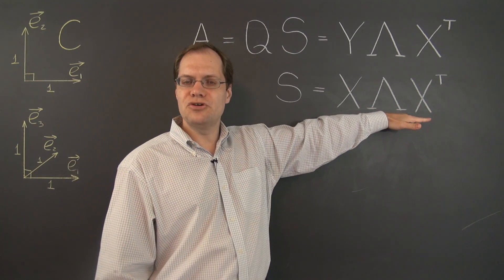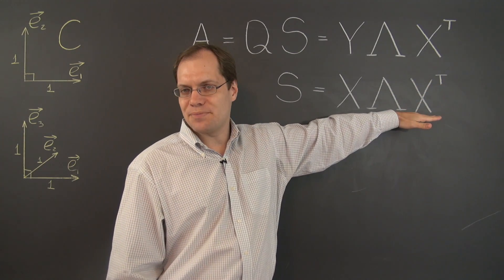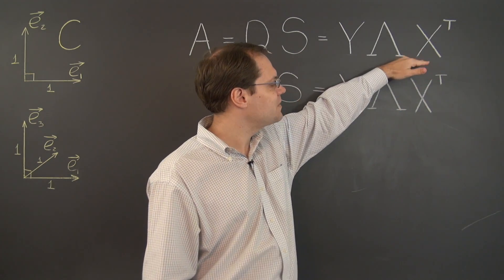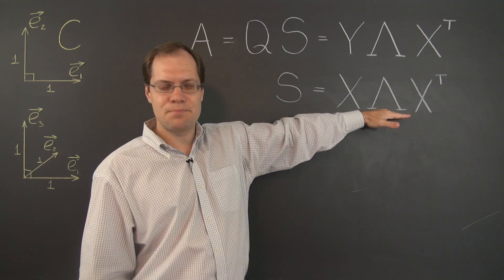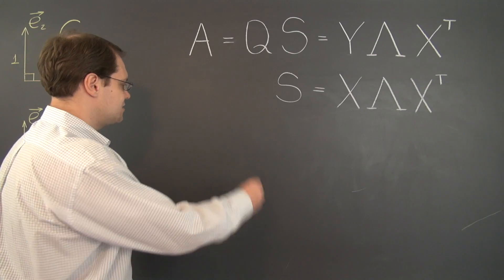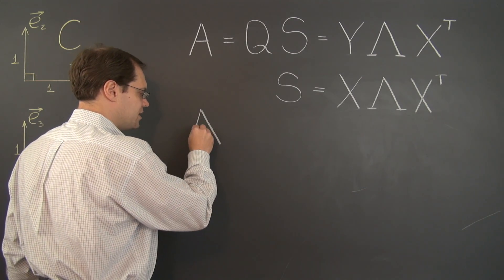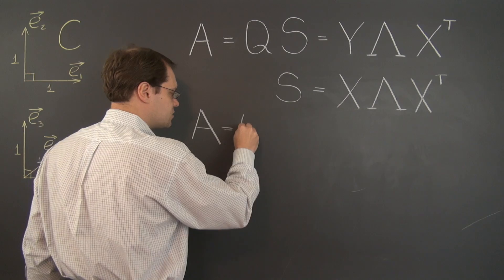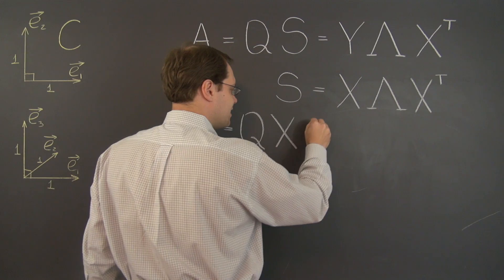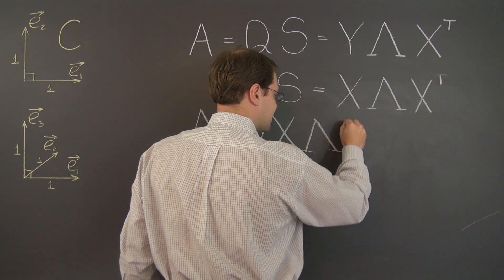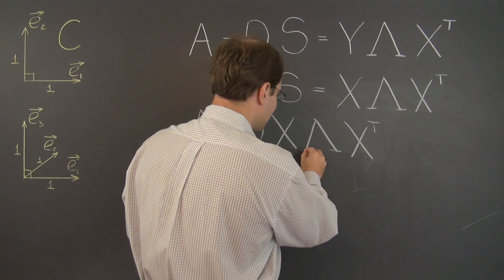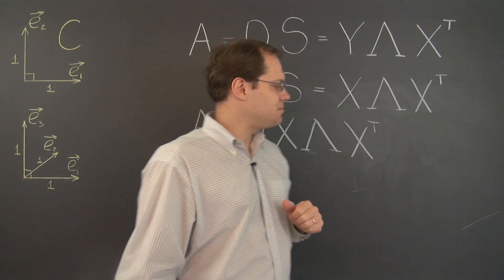So that's the geometric interpretation of this decomposition. Now, all we need to do to get to the singular value decomposition is simply plug in the eigenvalue decomposition of the symmetric matrix S back into this decomposition. And here's what we end up with. We end up with A equals Q and then X lambda X transpose. And you can see that what we have here is pretty much the singular value decomposition for the matrix A.